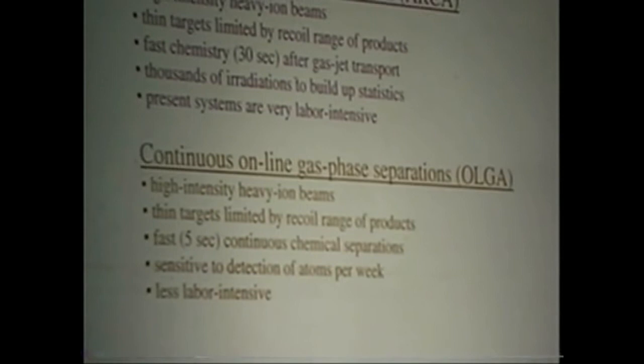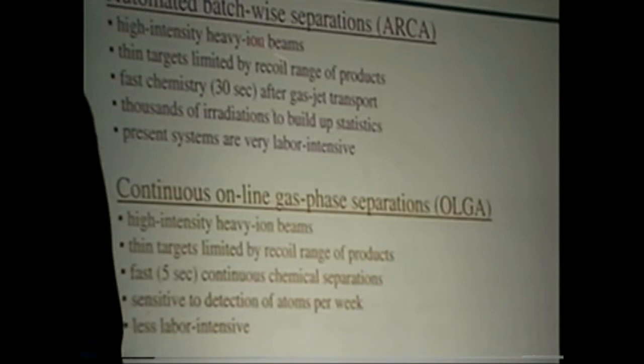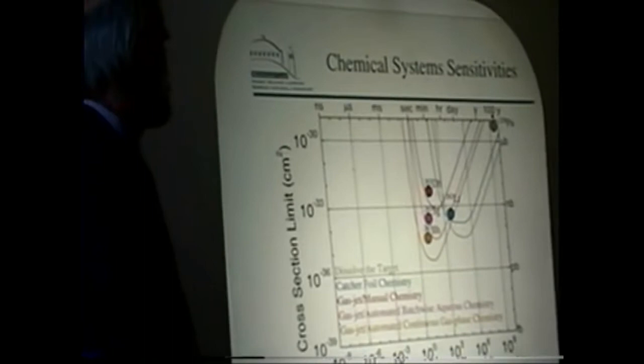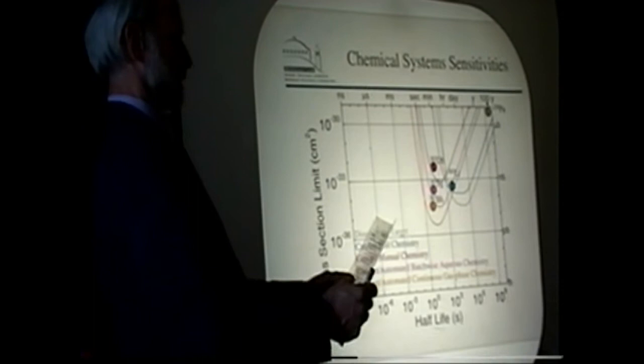And we can do thousands now of irradiations, irradiation, separation, and counting cycles to build up statistics. The present systems, ARCA, are very labor intensive but can give sensitivity down to the sub-nanobar region. This is the 265 Seaborgium experiment that was done a few years ago.